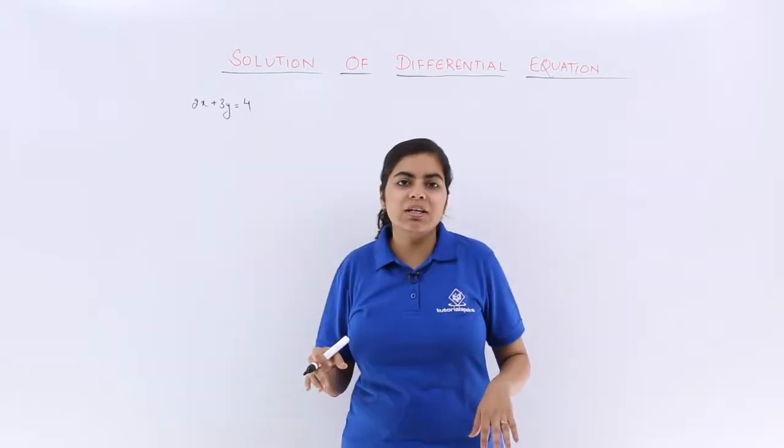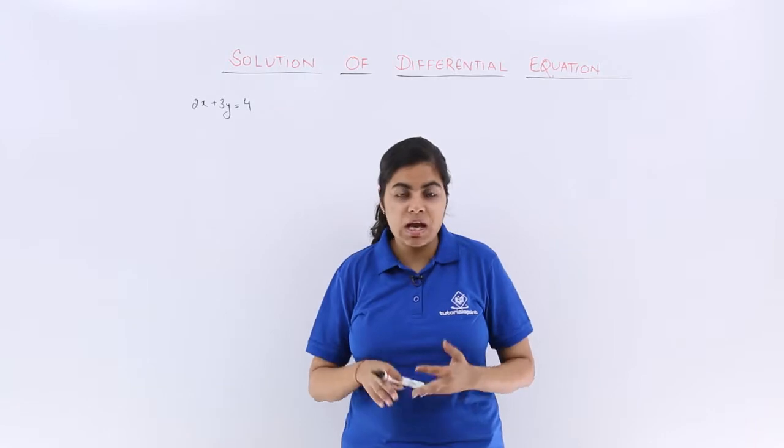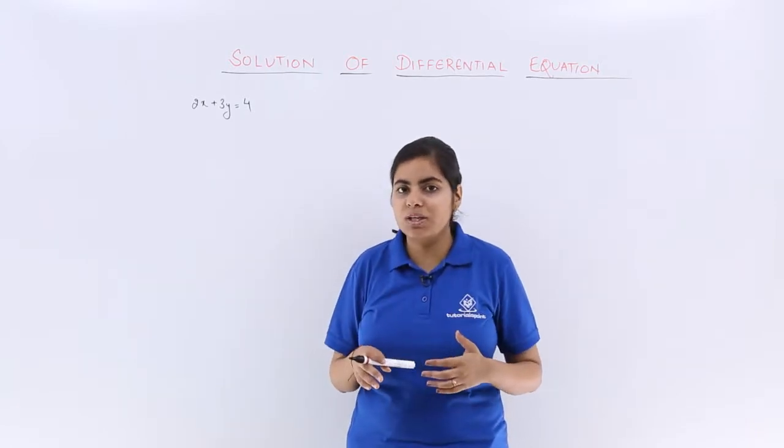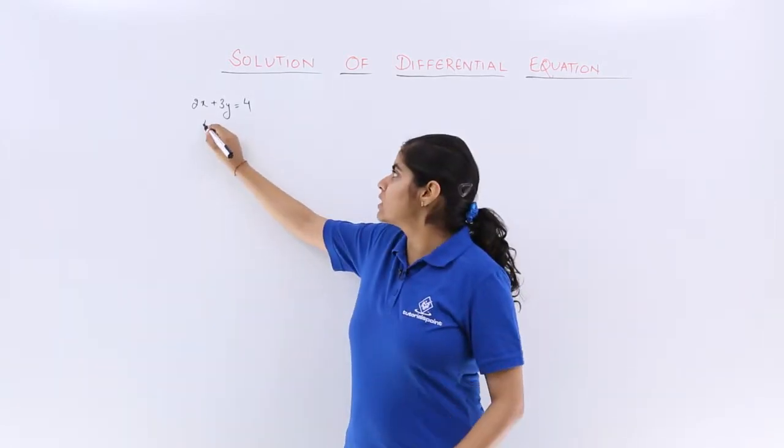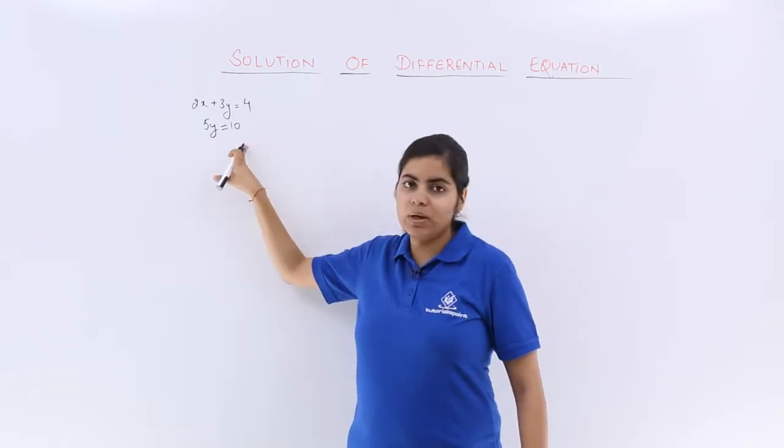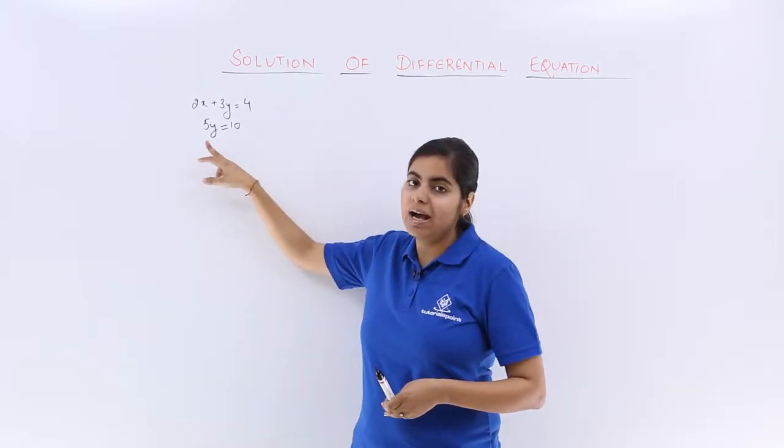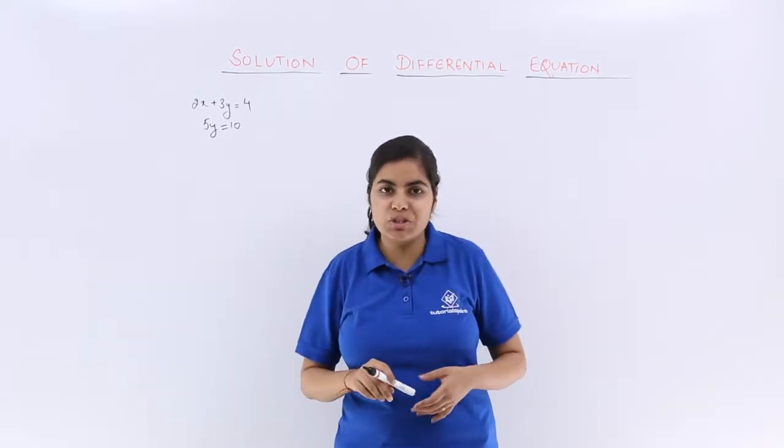Suppose there is another equation. You either use elimination method or substitution method. But what about something of this sort? Say I have 5y is equal to 10. This is a linear equation in only one variable. What is the value of y? y is equal to 10 upon 5 which is 2.